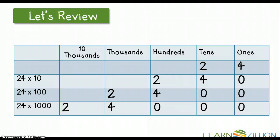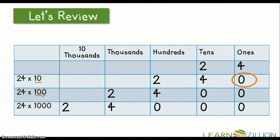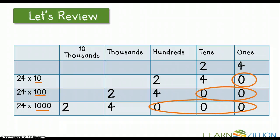Yesterday, you were multiplying by powers of 10. When we took the number 24 and multiplied it by 10, we just tacked on one zero to the end of 24 and shifted one place to the left on our place value chart. We did the same thing when we multiplied 24 by 100 — we tacked on two zeros and shifted two places to the left. And then we multiplied 24 by 1,000 and tacked on three zeros, shifting three places to the left in our place value chart.